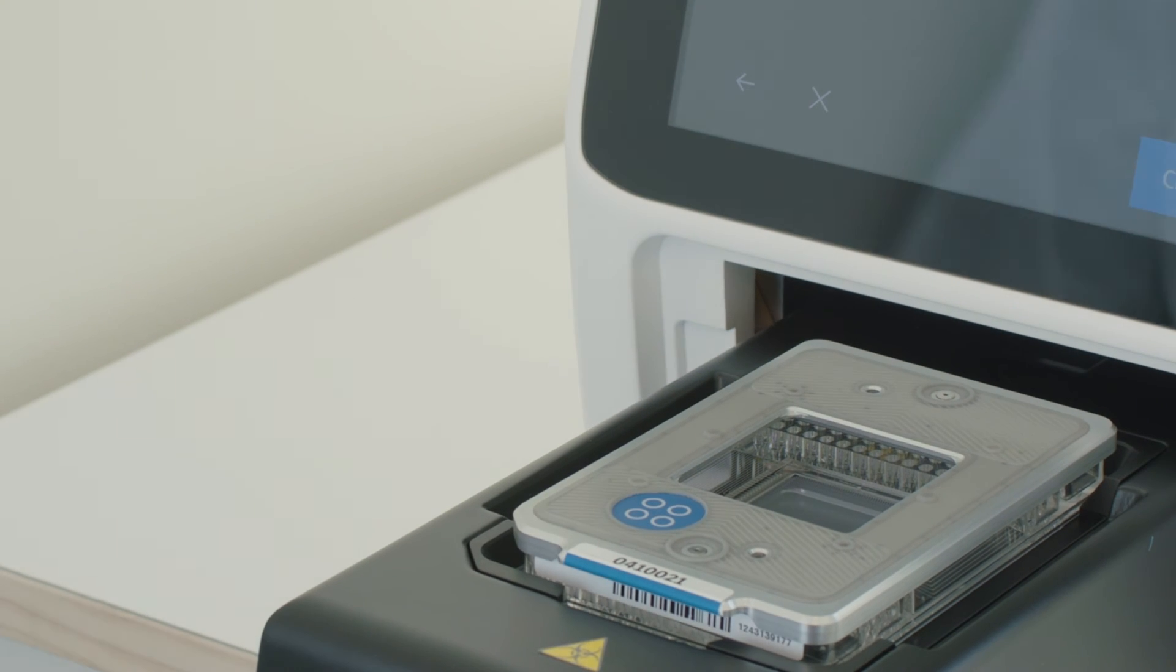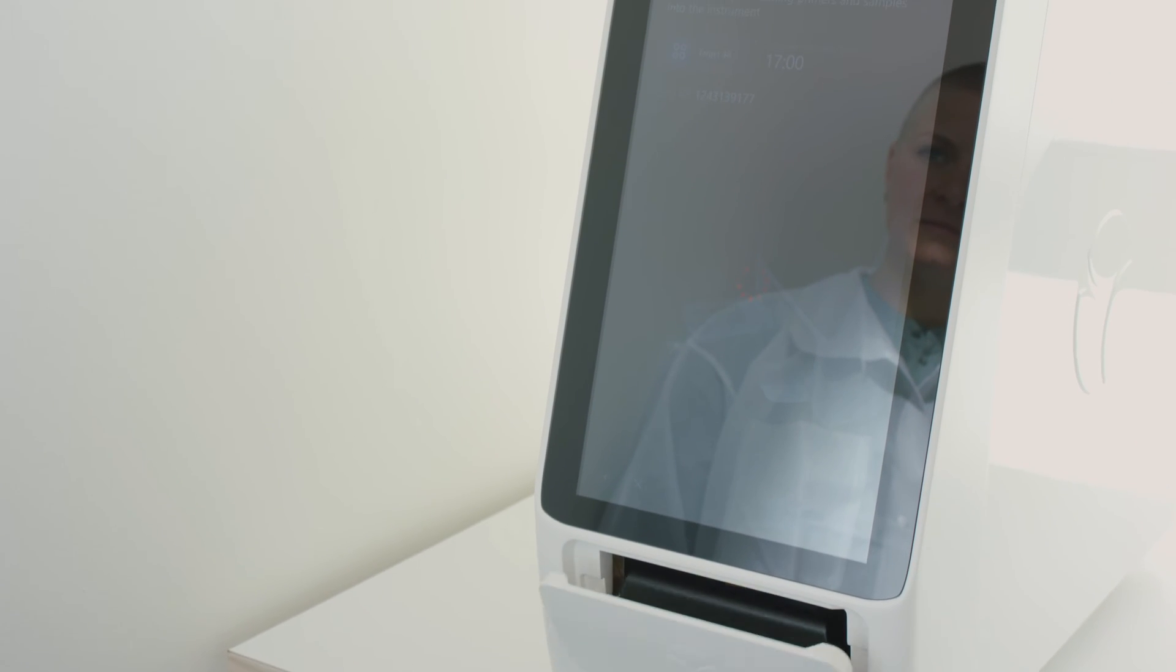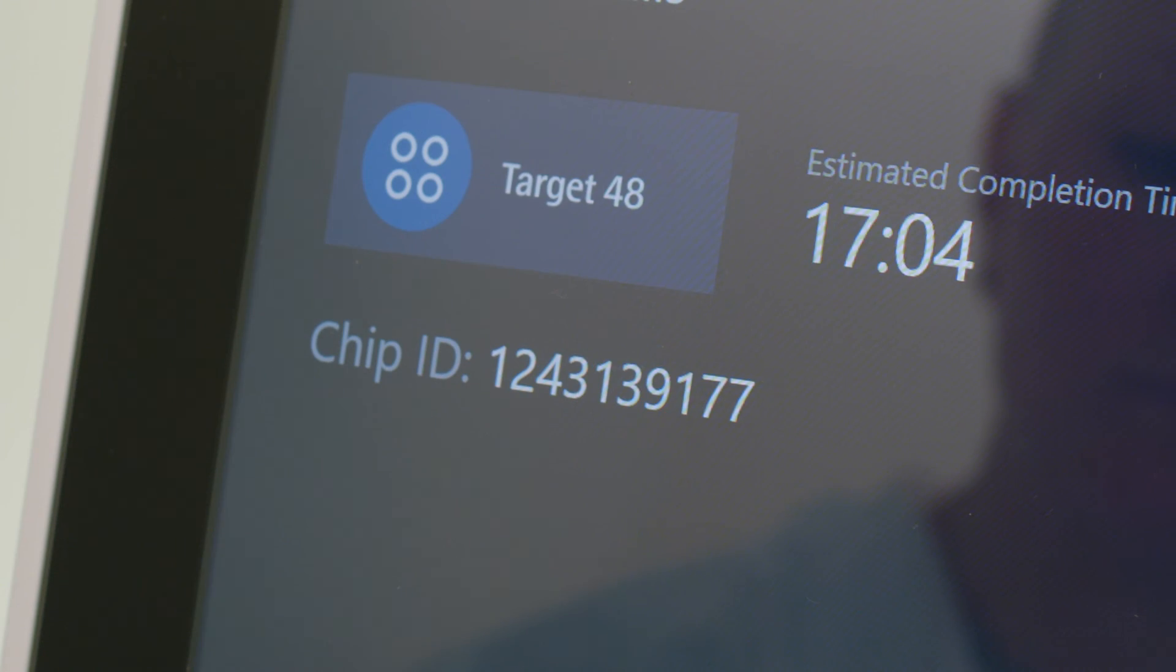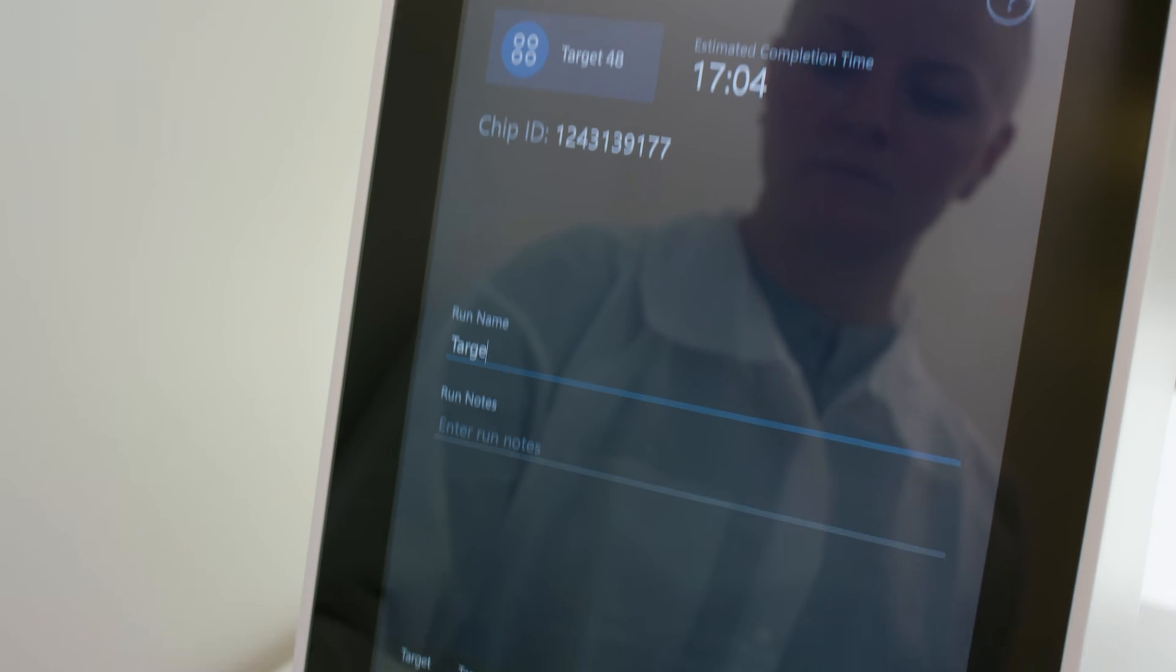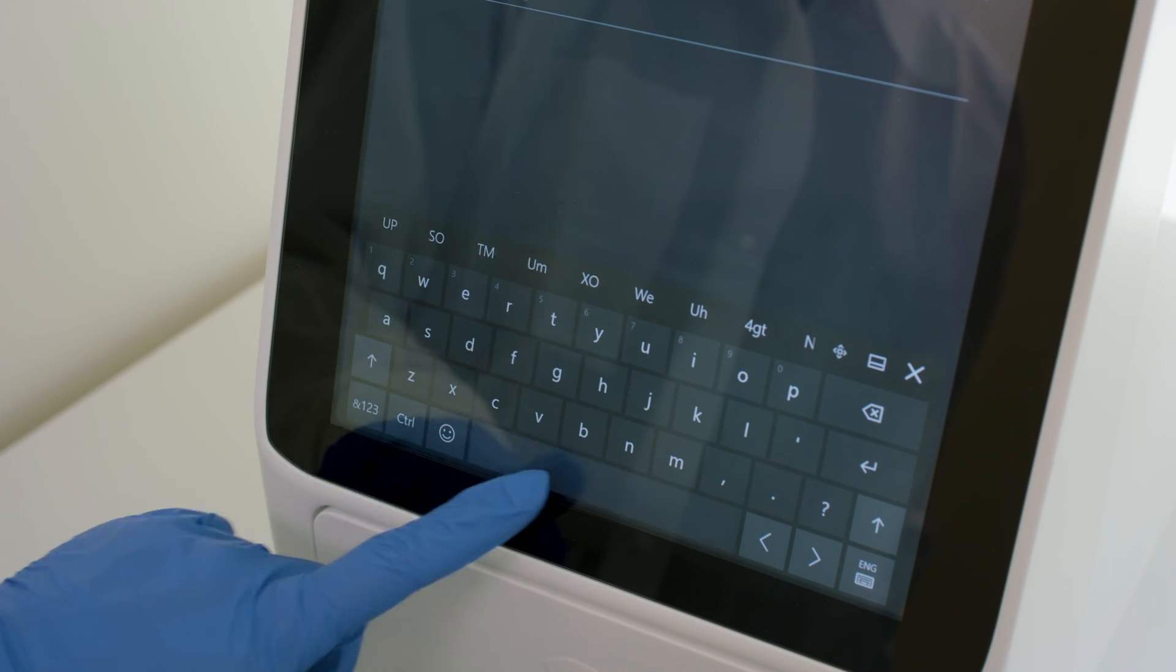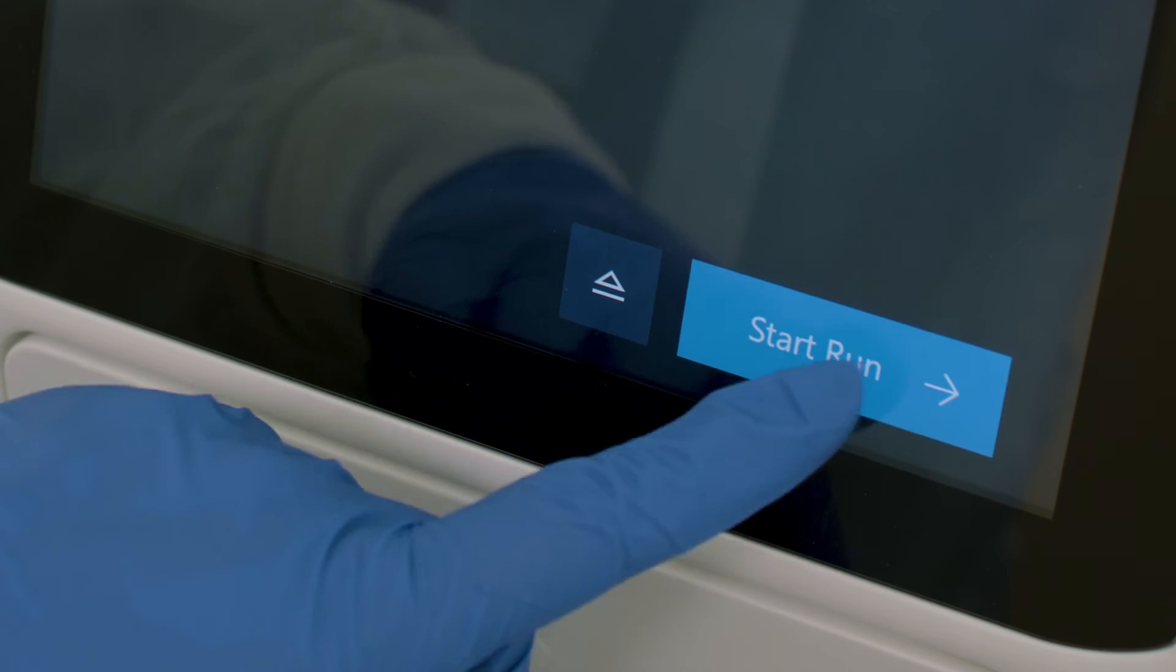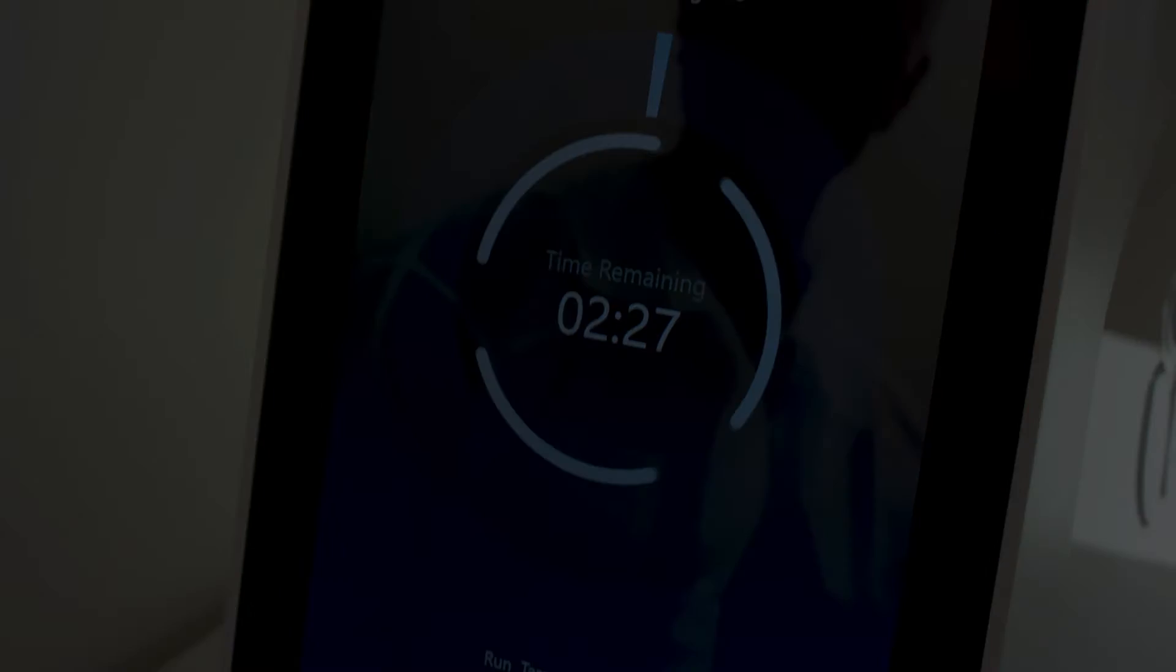Close the Shuttle Drawer by tapping Close Drawer. The system scans the IFC and interface plate barcodes, then closes the drawer. On the Add Run Details screen, confirm the Chip ID, then enter a custom run name or run notes if desired, and select the panel type. Tap Start Run. The run begins and the screen displays the time remaining. Tap Finish when the run is completed.